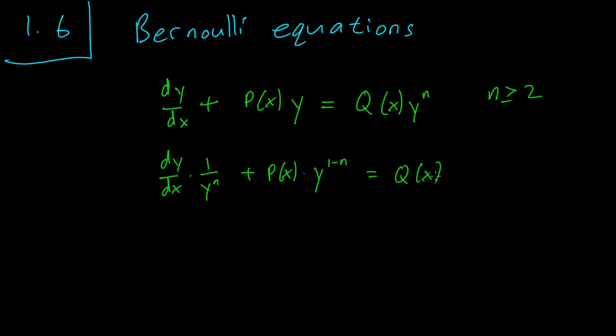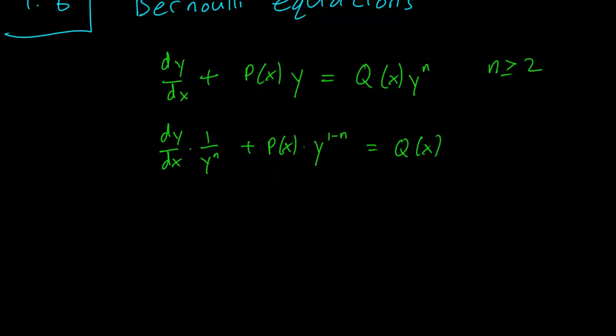Now our strategy here is to make the substitution v equals y to the 1 minus n and hope that by the magic of the chain rule that this 1 over y to the n term will disappear.